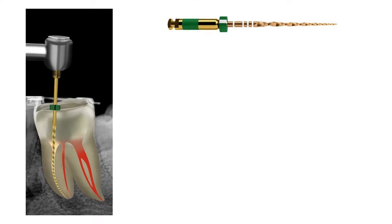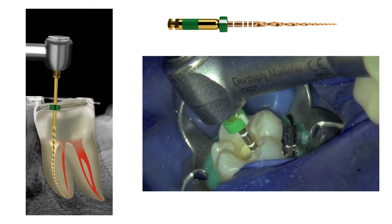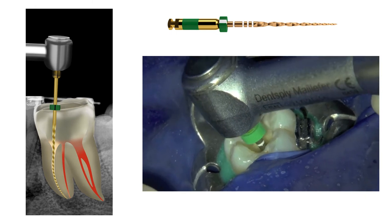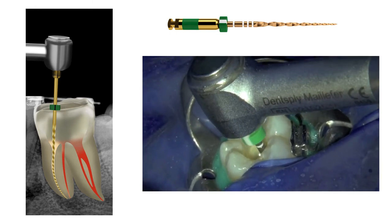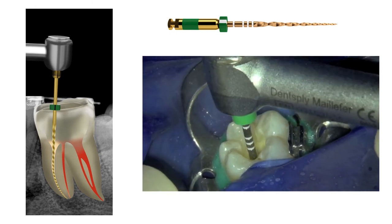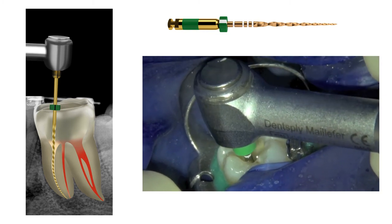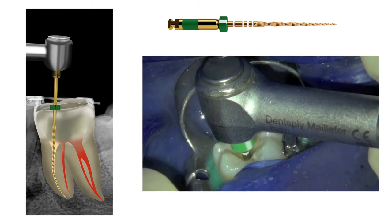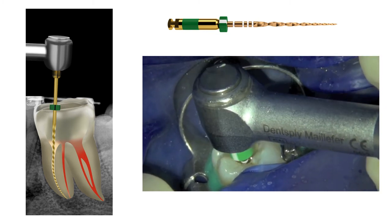A size medium WaveOne Gold reciprocating file was selected for root canal preparation, taking into account the size of the root canals. The access cavity was filled with 3.5% sodium hypochlorite, and here you can see the preparation of the mesiobuccal and the mesiolingual root canals using the single WaveOne Gold reciprocating instrument.